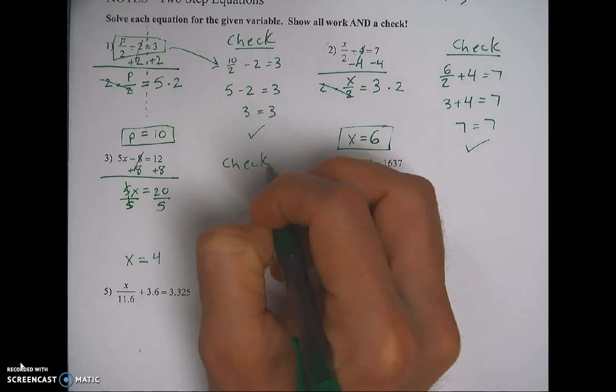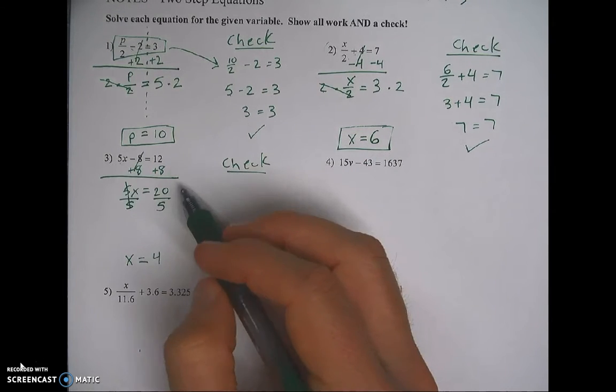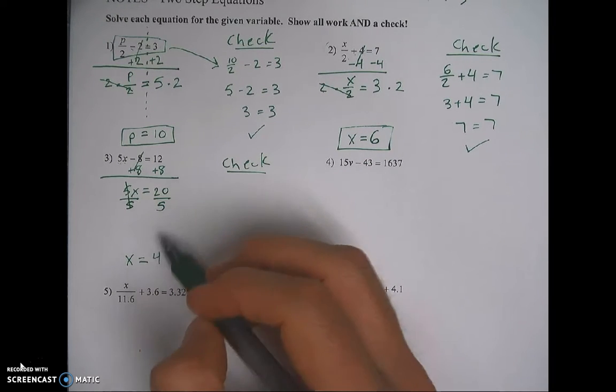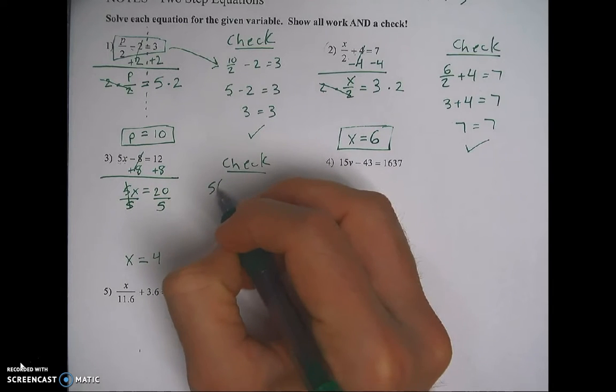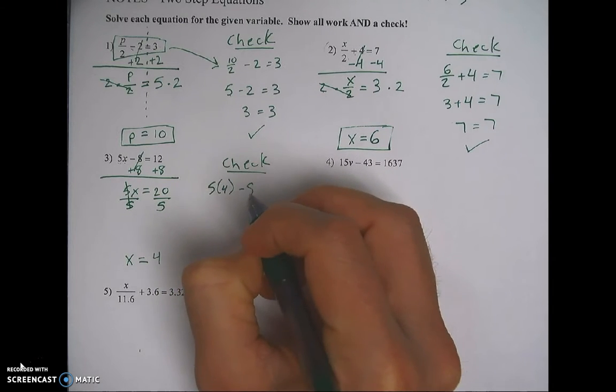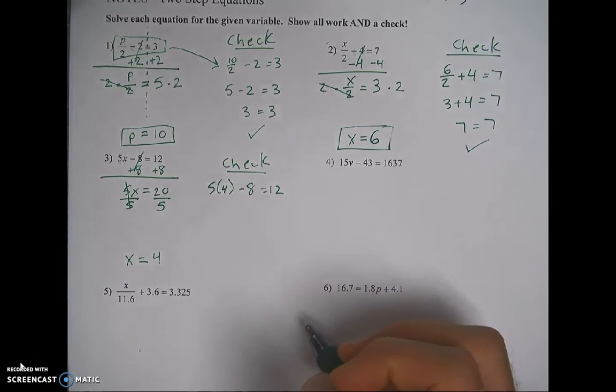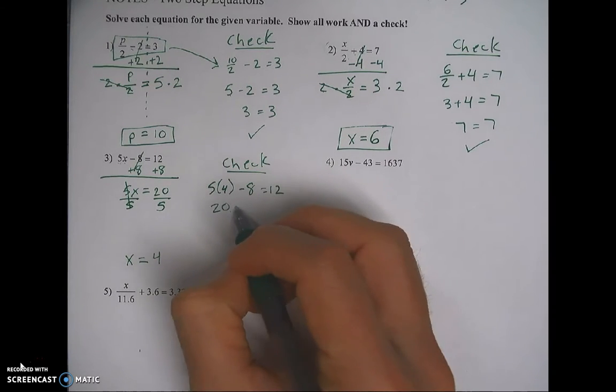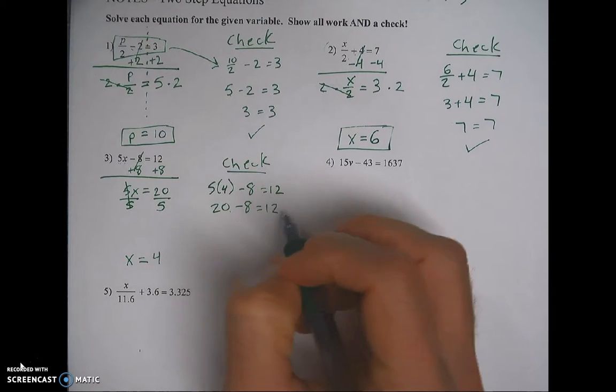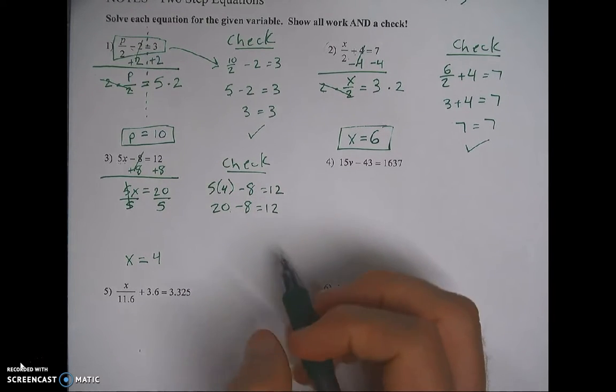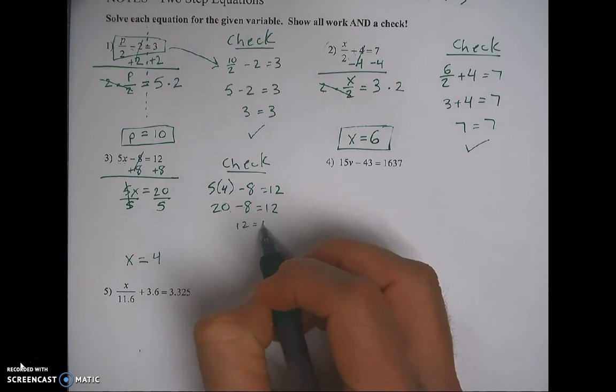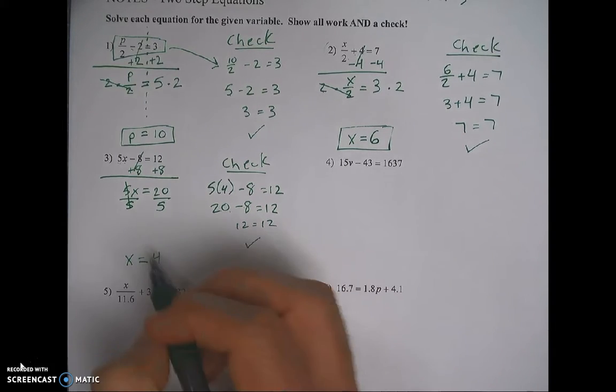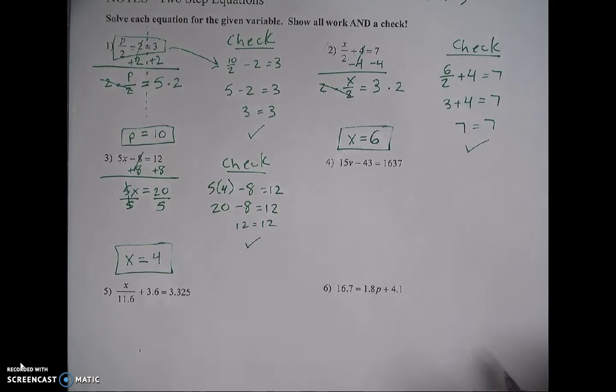Let's check it. Original equation. So 5 times x is now 5 times 4. Minus 8 equals 12. We've got to multiply first. Show each step. So all of these checks are going to have three lines. 20 minus 8 is 12. I get 12 on both sides. That's my answer of x equals 4 is good.